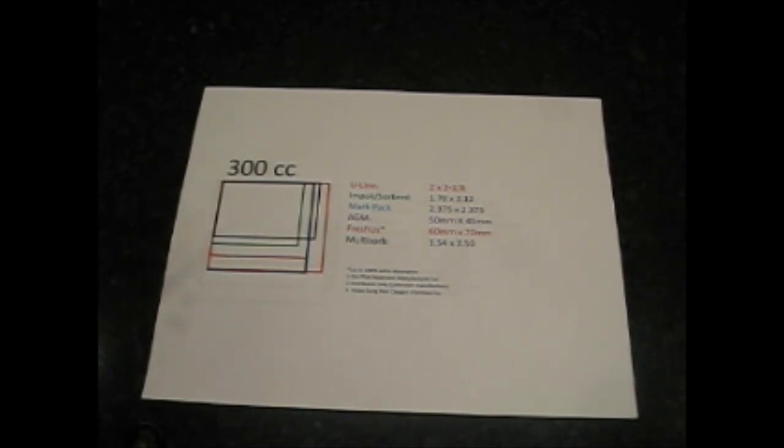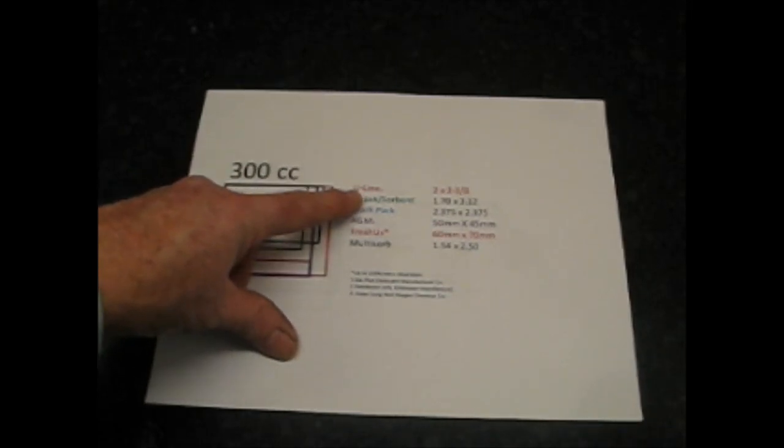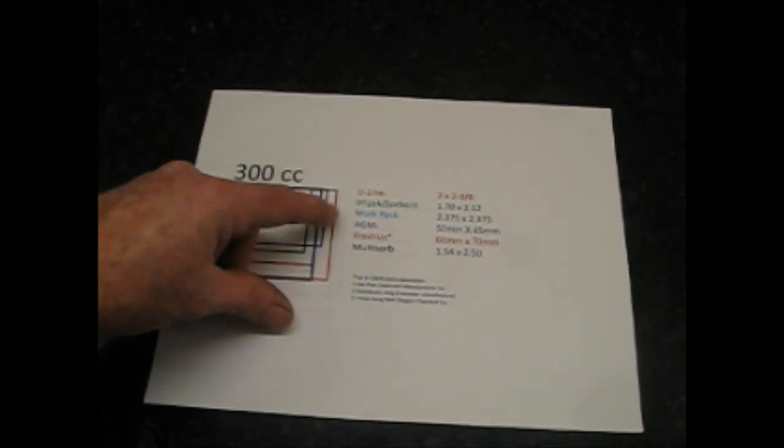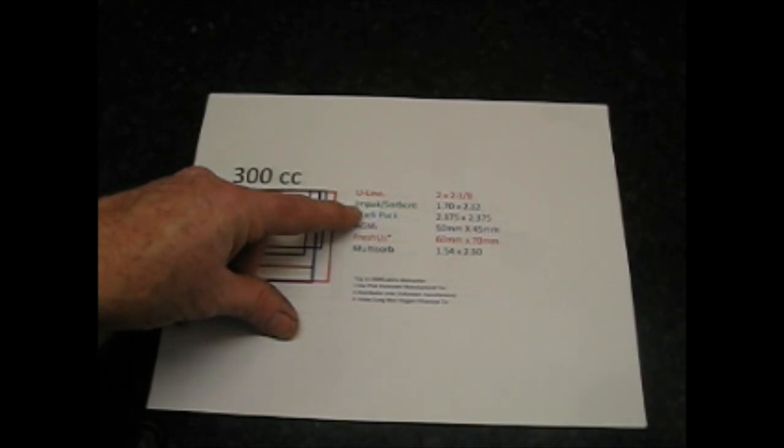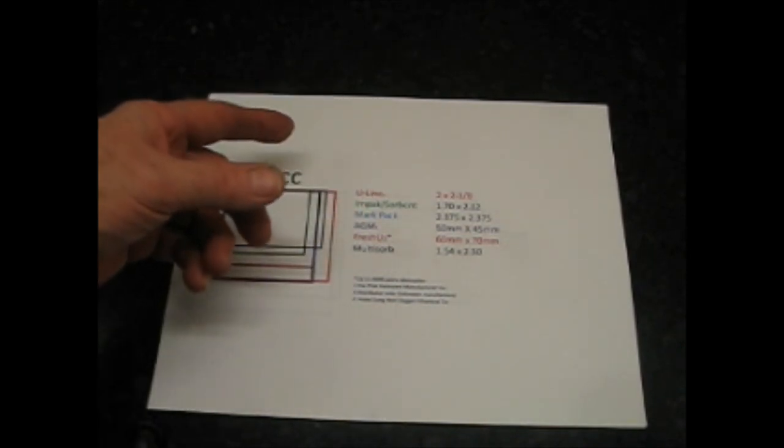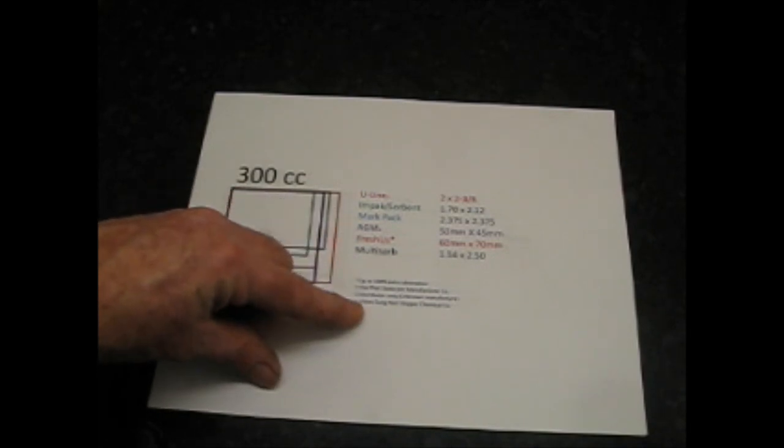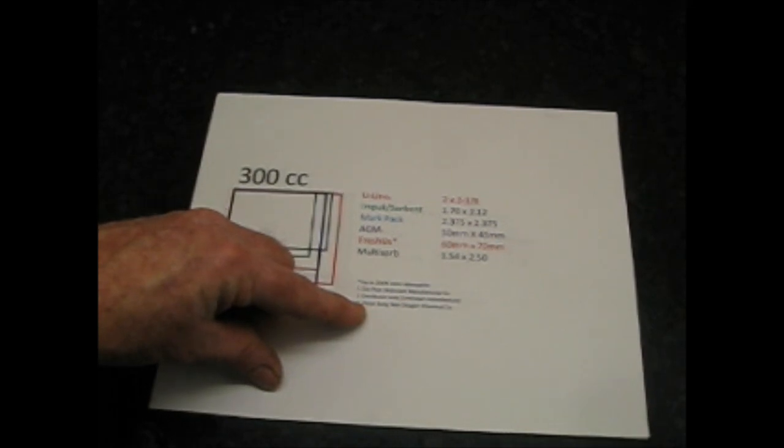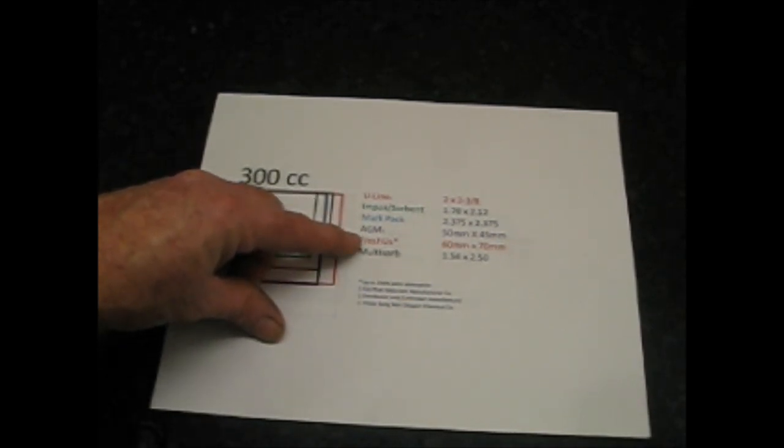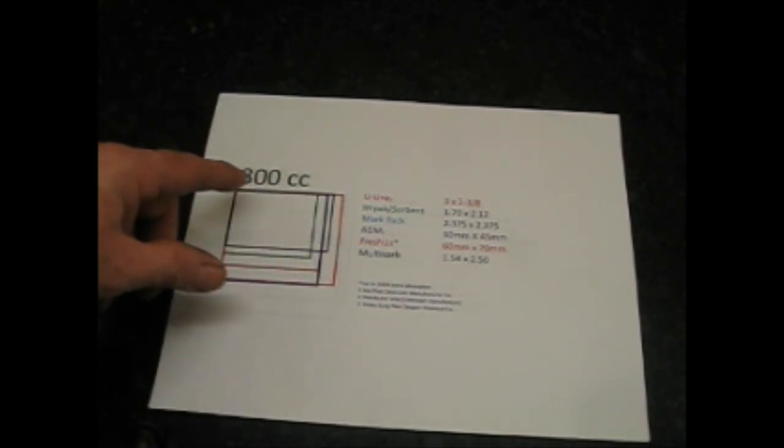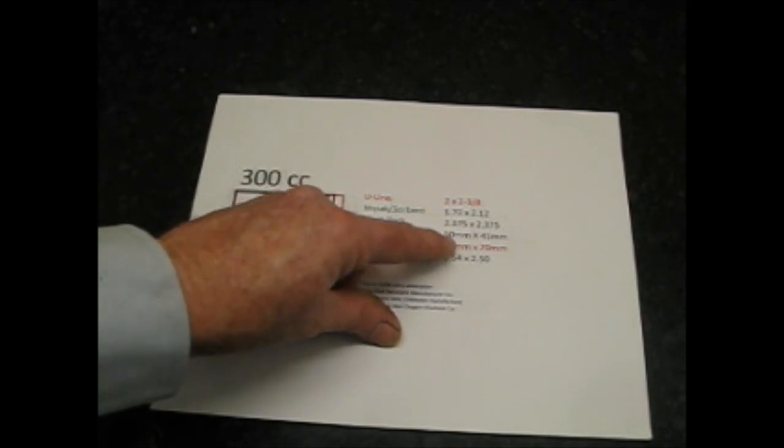I pretty much have about six of the big ones. I have Uline—now Uline is not a manufacturer, they are a distributor. Then I have Impak and Sorbent, which is the same company. They often go by different brand names. I have AGM, which is a distributor for a company called Heosung in China. Fresh US, and I want to come back to Fresh US because I really like that company, and also a company called Multisorb. For the 300 cc oxygen absorbers, these are the physical dimensions, either in inches or in millimeters of their stated packages.